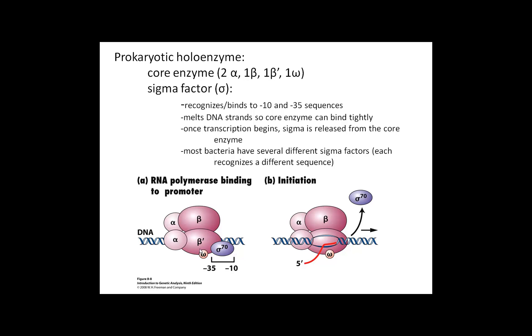Once the sigma factor does that and transcription begins, the sigma actually falls off. It's completed its job and it'll go on to bind to another promoter. In contrast, the rest of that core enzyme is going to continue on transcribing during elongation.